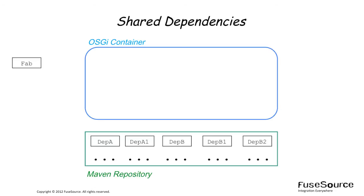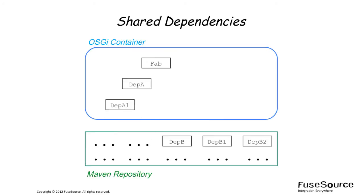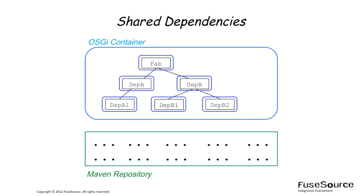The second option is the case of shared dependencies. In this case, all of the dependencies will be packaged individually as OSGI bundles, enabling them to be shared with other applications deployed in the container. In effect, this deployment option is similar to the conventional way of deploying OSGI bundles. Install the FAB using the OSGI install command; if necessary, the FAB downloads the dependencies from a Maven repository, and after all dependencies are downloaded, they are each converted individually into OSGI bundles.